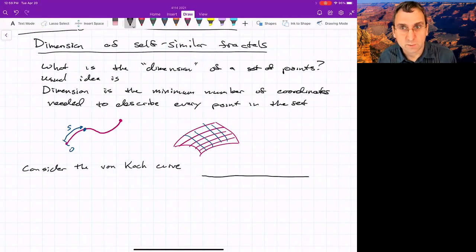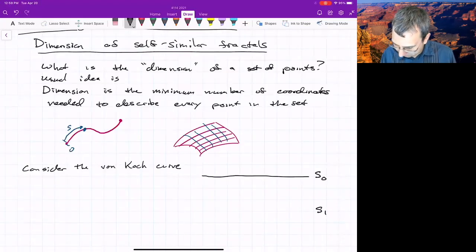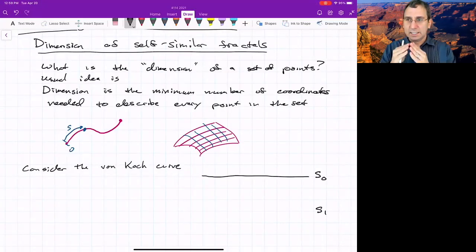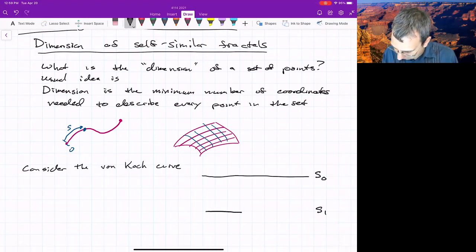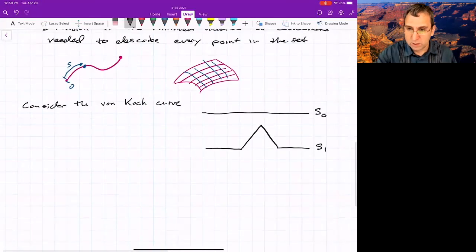But you start with a line. You can think of it as the unit interval, if you want. So we'll call that S0. So we start with a line segment, and then to generate the next step, S1, we delete the middle third of S0 and replace it with two sides of an equilateral triangle. So we've got this, and then in the middle third, we make an equilateral triangle. So each of these four segments is the same size. Then we do this again.